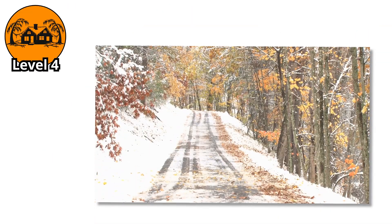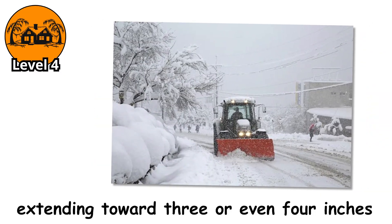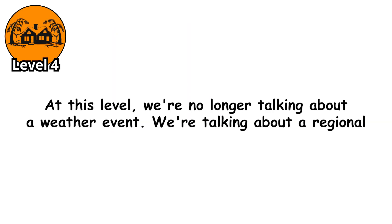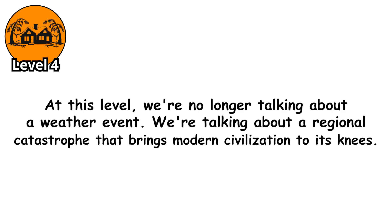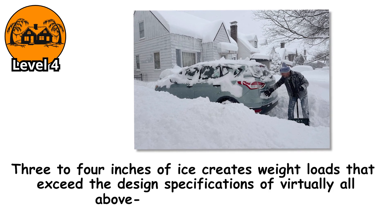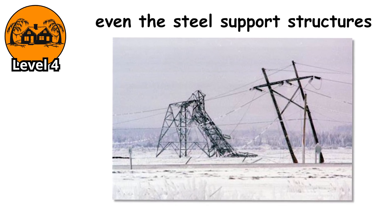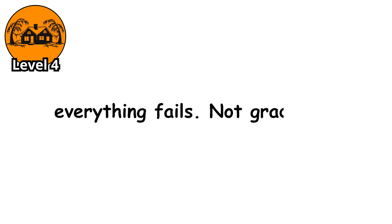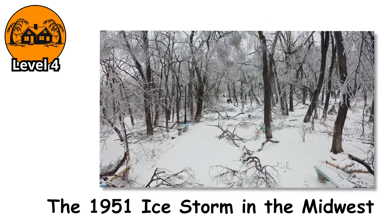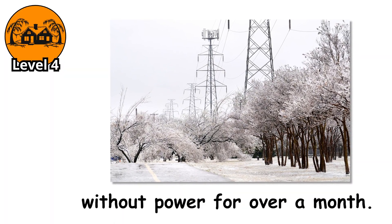Level 4. This is the monster — the nightmare scenario. Ice accumulation exceeds 2 inches, extending toward 3 or even 4 inches in the most extreme recorded cases. At this level, we're no longer talking about a weather event — we're talking about a regional catastrophe that brings modern civilization to its knees. 3 to 4 inches of ice creates weight loads that exceed the design specifications of virtually all above-ground infrastructure: power lines, telecommunications cables, even the steel support structures of electrical transmission systems. Everything fails. Not gradually — simultaneously and catastrophically. The 1951 ice storm in the Midwest saw accumulations reaching 3 inches in some areas, and the damage was so severe that some communities were without power for over a month.